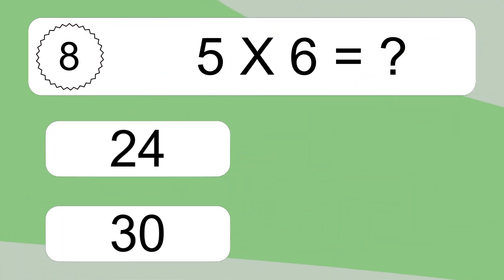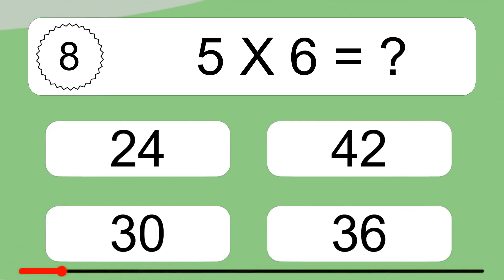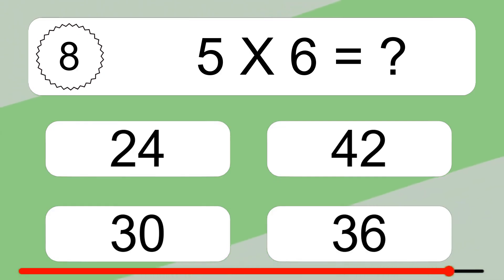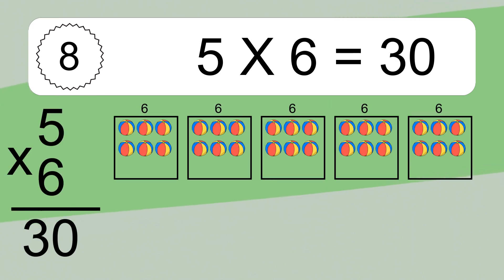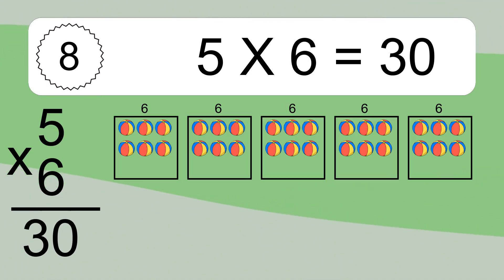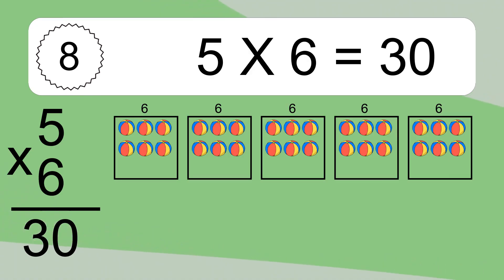5 times 6 equals what? 5 times 6 equals 30. We have 5 boxes, and each box has 6 colorful balls inside. If you count all the balls in all the boxes together, you will have 5 times 6 balls. This equals 30 balls.